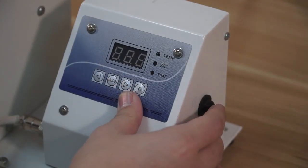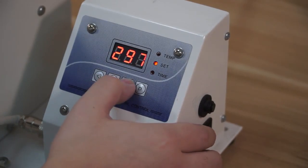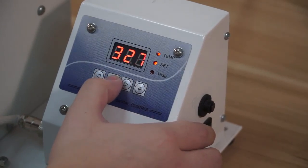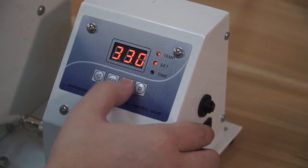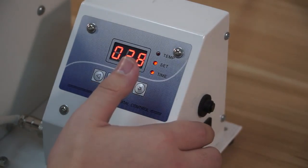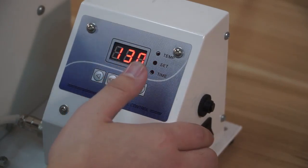First of all, turn on the machine and then set the printing temperature. One should be 300 Fahrenheit degrees and the other one should be 330 Fahrenheit degrees. Then set the printing time, it should be 30 seconds. Okay, finished.